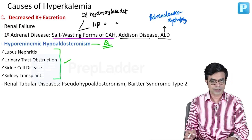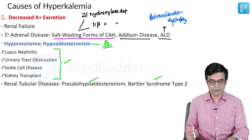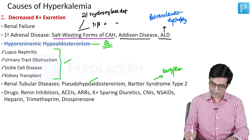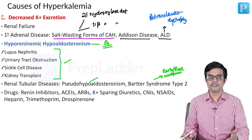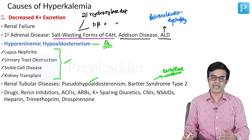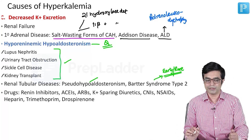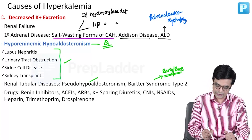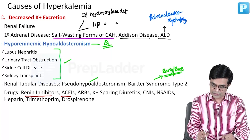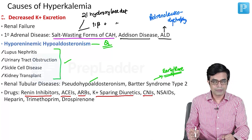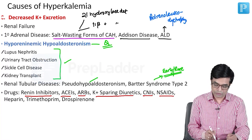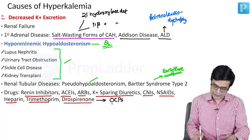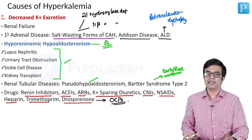Renal tubular disease causing hyperkalemia includes pseudohypoaldosteronism and Bartter syndrome type 2 — only the early-onset or rare forms. Usually Bartter syndrome produces hypokalemia, but type 2 can sometimes cause hyperkalemia in early or acute stress forms. Drugs causing hyperkalemia by decreasing potassium excretion include: renin inhibitors, ACE inhibitors, angiotensin receptor blockers, potassium-sparing diuretics, calcineurin inhibitors like cyclosporin and tacrolimus, NSAIDs, heparin, trimethoprim, and drospirenone — a component of some oral contraceptive pills.